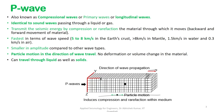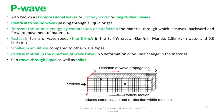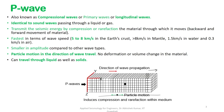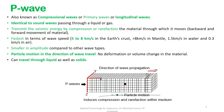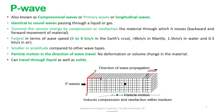P waves are the fastest seismic waves: 5 to 8 km/s in the earth's crust, more than 8 km/s in the mantle, 1.5 km/s in water, and 0.3 km/s in air. Their amplitude is relatively less compared to shear waves and surface waves, but their propagation velocity is much faster. The direction of wave propagation and the direction of particle compression and rarefaction are the same, and once the wave passes, there is no permanent volume change.